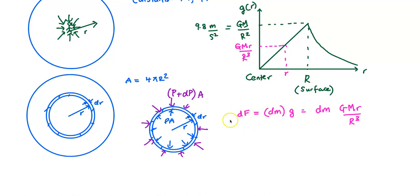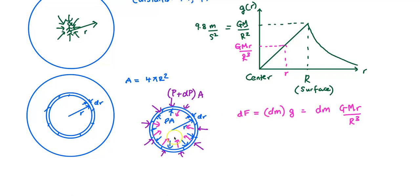In which direction is this gravitational force going to act? Unlike electrostatics where like charges repel, in gravitation masses always attract each other. So this mass is going to be pulled toward the center of the Earth with force dF. This dF is an attractive force pulling the element we are considering toward the center of the Earth.